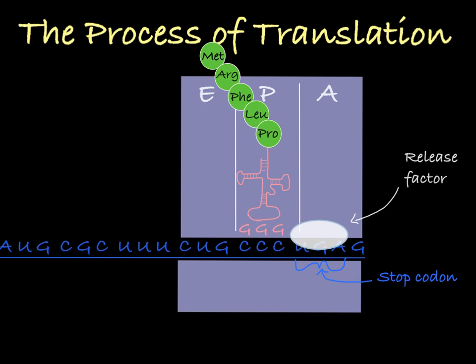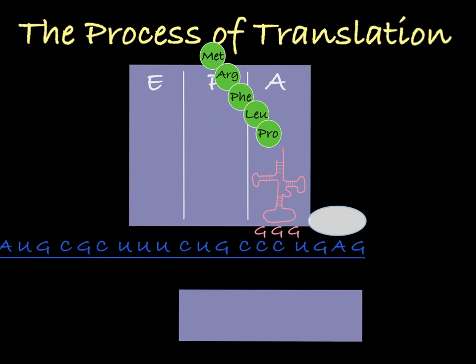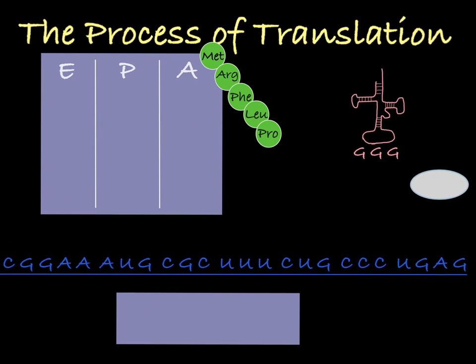This interaction causes the two ribosomal subunits to detach from each other and the mRNA. The tRNA will then also detach from the polypeptide chain.